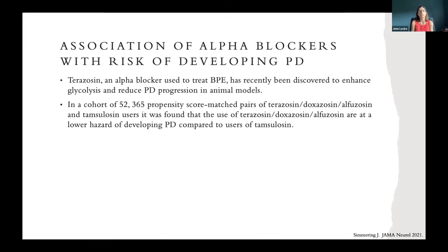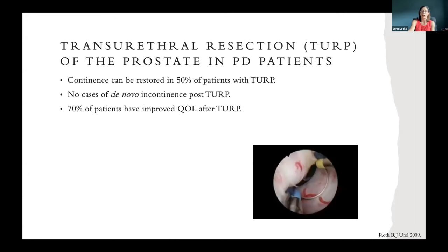Interestingly, terazosin — an alpha blocker that relaxes the urethra allowing the bladder to empty better, used to treat benign prostatic enlargement — has recently been discovered to enhance glycolysis and reduce Parkinson's progression in animal models. In a cohort of about 52,000 people, a propensity score matched analysis found that terazosin, doxazosin, and alfuzosin users had a lower hazard rate of developing Parkinson's disease compared to tamsulosin users. As urologists we often prescribe tamsulosin as first line, but perhaps we should prescribe one of these other agents for patients with Parkinson's disease. 5-alpha reductase inhibitors in Parkinson's disease have only been studied in animal models.